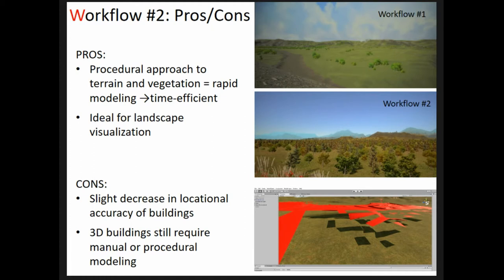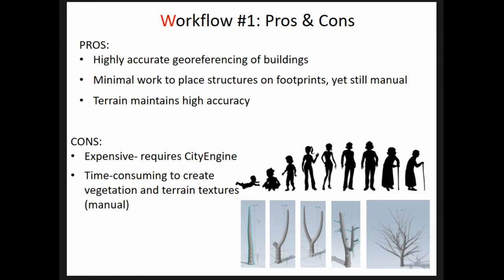In workflow 2, it's less expensive, more accessible, and allows us to do all the GIS work in QGIS and then use Gaia — a $40 plugin — that allows you to do procedural modeling within Unity. It generates terrain and vegetation from a shapefile that is converted into an image. It also allows you to do georeferencing. However, there are some cons to this method as well.